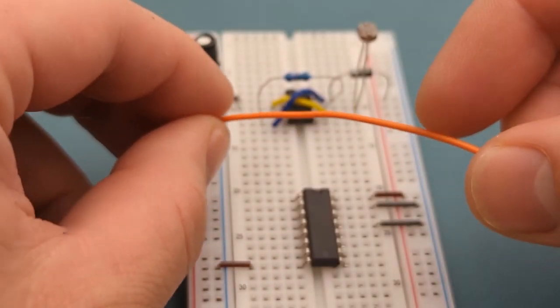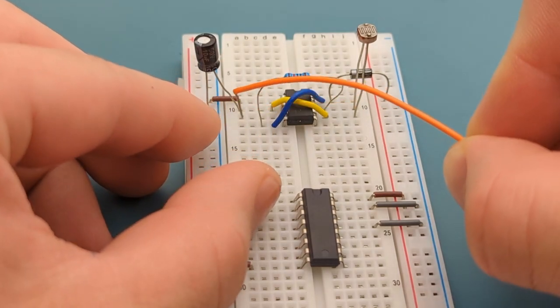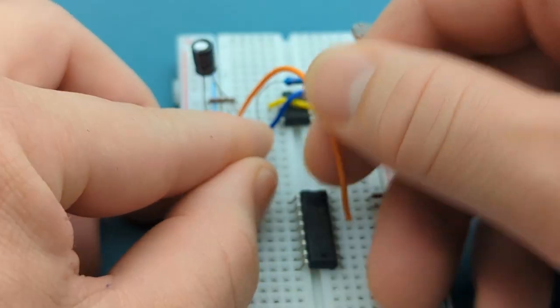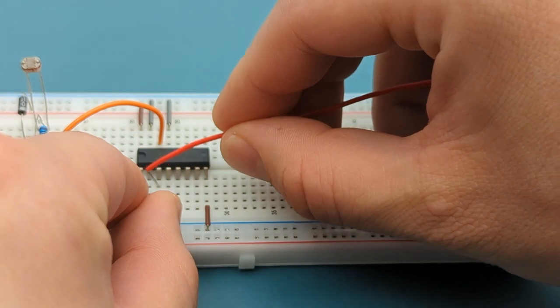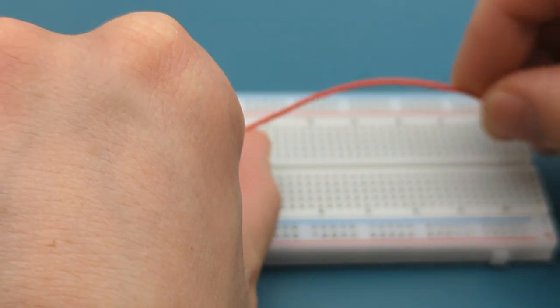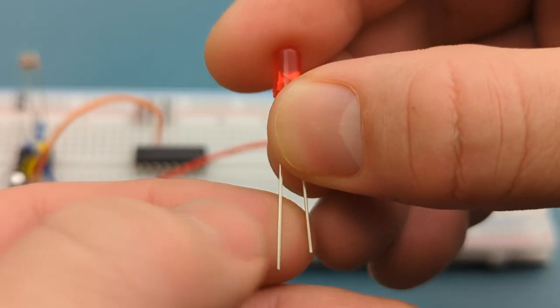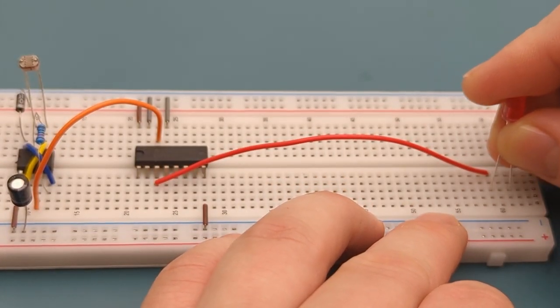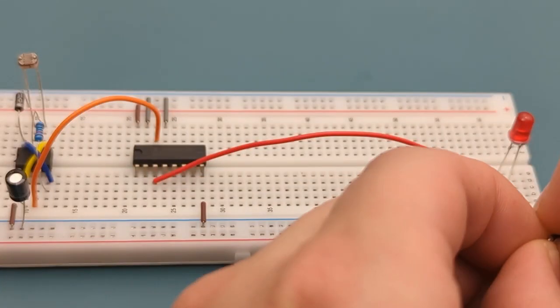Insert a jumper wire into pin 3 of the 555 timer and pin 14 of the CD4017. Insert a jumper wire into pin 3 and the bottom of the breadboard. Pin 3 is connected to the first LED. Insert one leg of the LED in the same row as the jumper wire and the other a few rows below it. Connect a jumper wire between the same row as the LED's shorter leg and the negative rail.